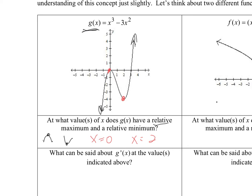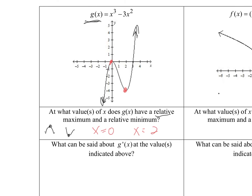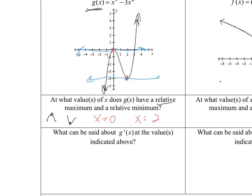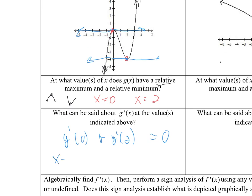What can we say about the derivative at these values? Derivatives mean the slope of the tangent line. If I draw a tangent line at these points, I hope you would see that G prime at X = 0 and G prime at X = 2 are both equal to 0, because at X equals 0 and 2 there are horizontal tangents.